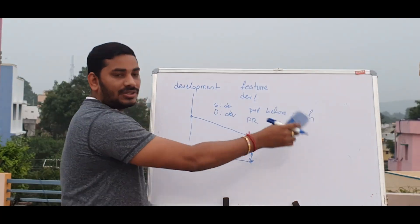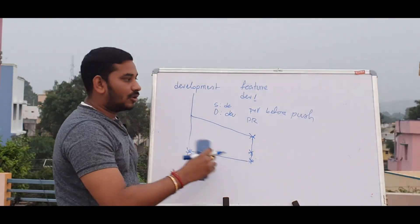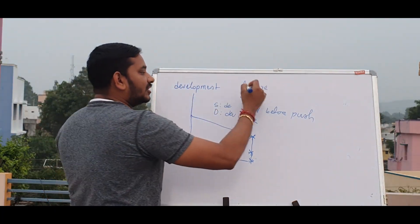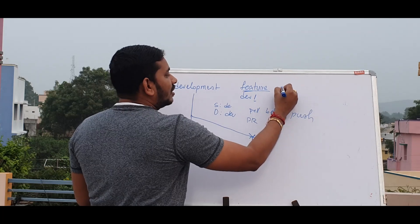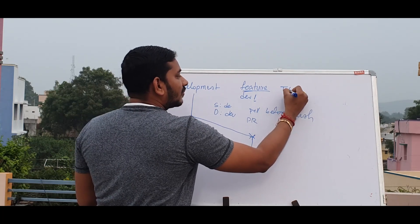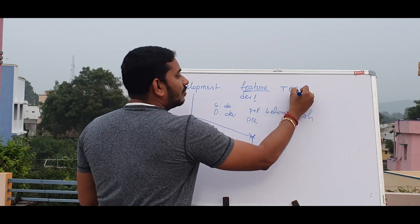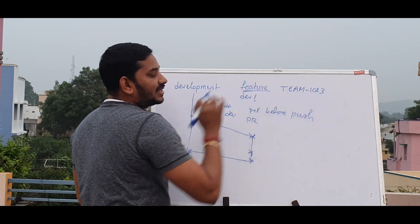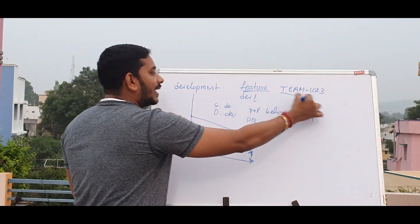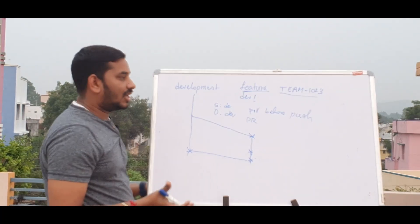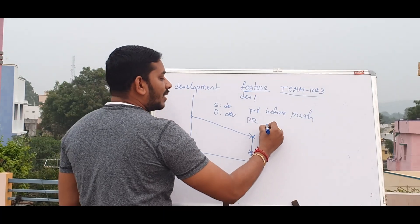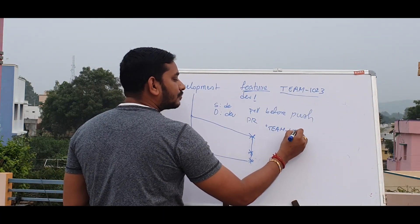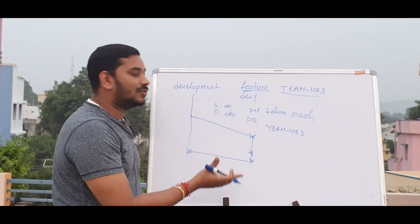Developer 1 and Developer 2 push to the development branch. For branch naming, use your Jira ticket ID — for example, your team ticket number 1023. You create a branch with that name for future reference. When you do a commit message, mention the Jira ticket ID first. This will be useful for future reference.